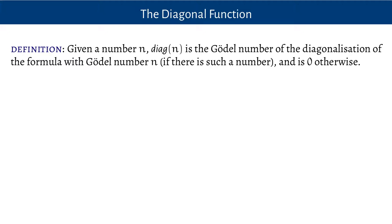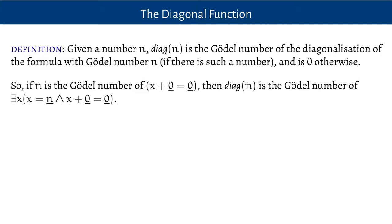Given any number n, diag(n) is the Gödel number of the diagonalization of the formula with Gödel number n, if there is such a formula. For numbers which aren't Gödel numbers of formulas, we just say diag of those numbers is zero. That's a function from numbers to numbers, and it's very easy to define. So if n is the Gödel number of x + 0 = 0, then diag(n) is the Gödel number of: there is an x such that x equals n and x + 0 = 0.